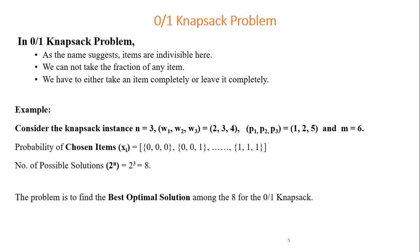In the zero-one knapsack problem, items are indivisible. You either select an item completely or reject it completely. For example, consider n = 3 items with weights 2, 3, 4 and profits 1, 2, 5, and a bag capacity m = 6. The possible solutions are all combinations — zero-zero-zero through one-one-one — that is 2ⁿ different combinations.